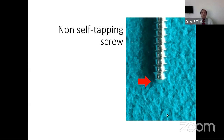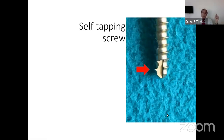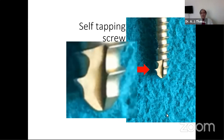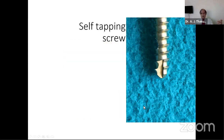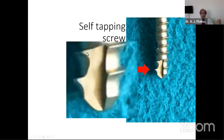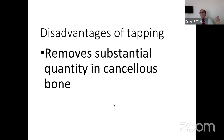A non-self-tapping screw tip has no mechanism to cut, so we must make threads with the tap instrument first and then pass the screw. A self-tapping screw has the thread-cutting mechanism built in, shown by the red arrow. The enlarged portion with the narrow dark valley carries the bone chip away while the cutting tip does the work. Tapping has a disadvantage — it removes substantial bone, particularly from cancellous bone. In cancellous bone, which is thin and weak compared to cortex, we do not advise tapping.